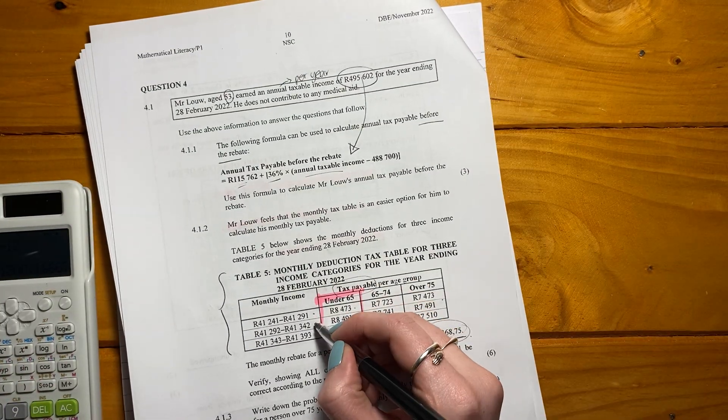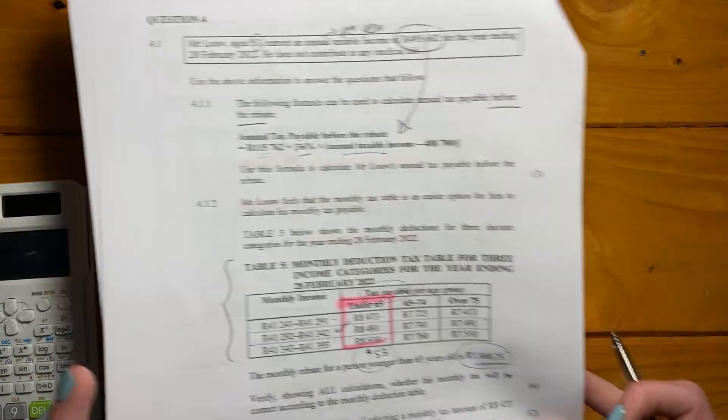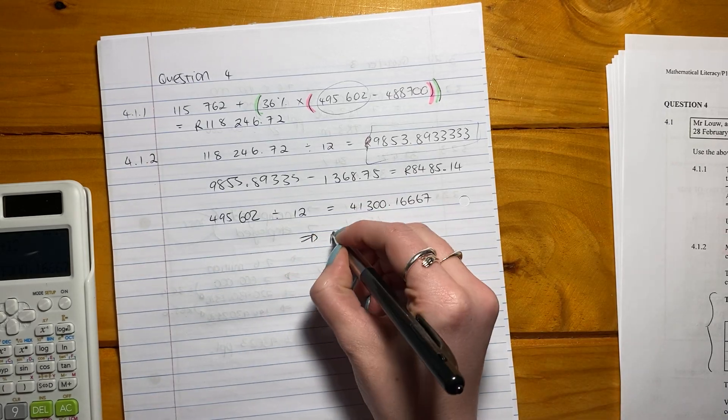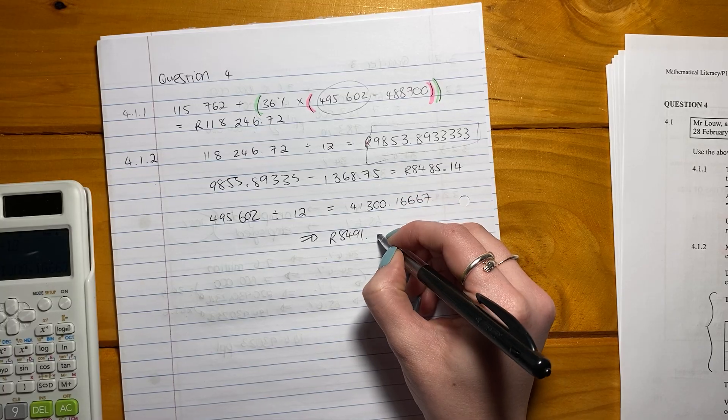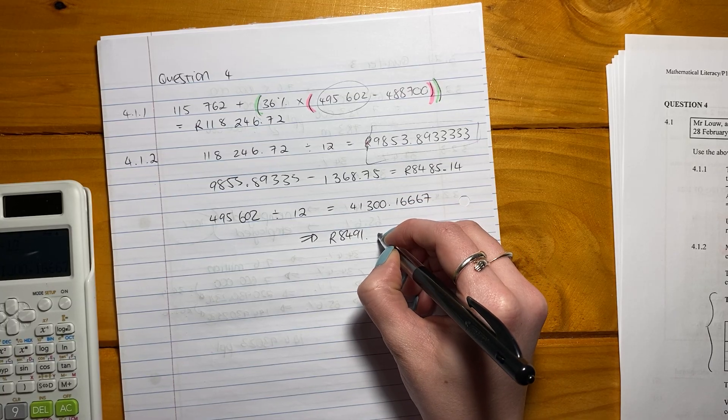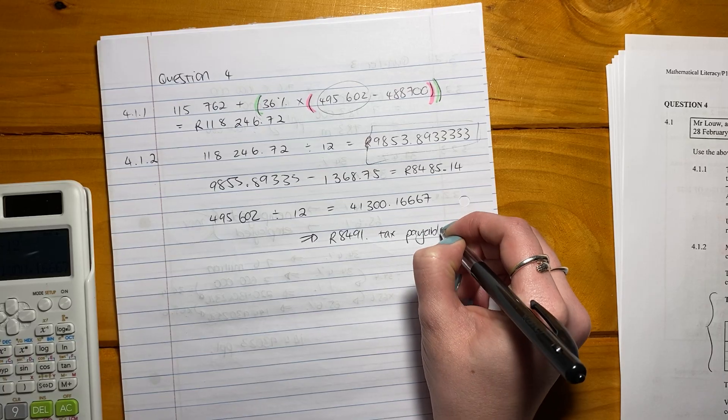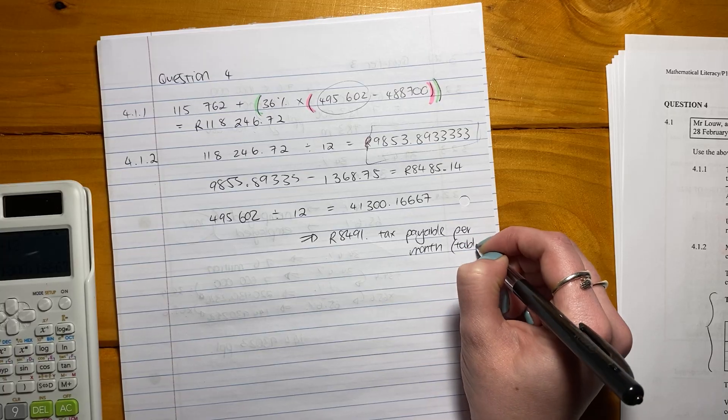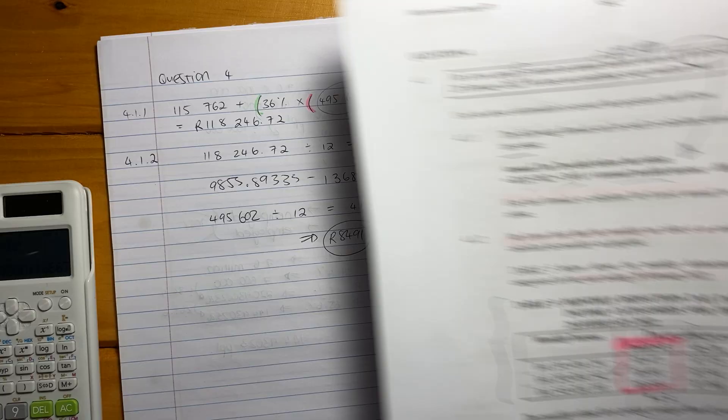It's not there. It's not there. He's there. So according to that, he would pay 8491. So he would pay 8491. That would be his tax payable, tax payable per month. That's according to the table. Now we have to compare that amount to that amount.